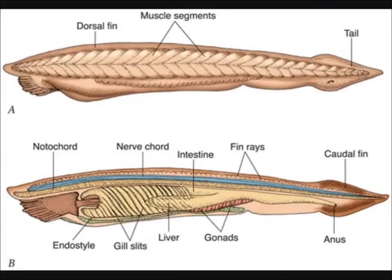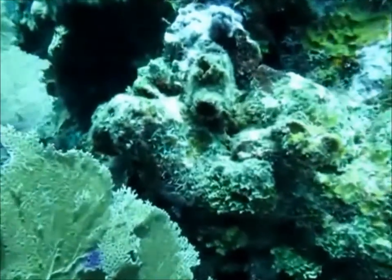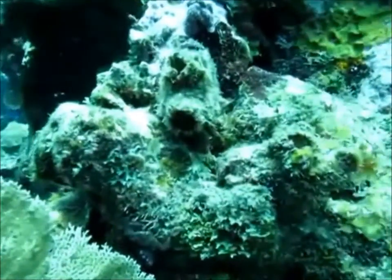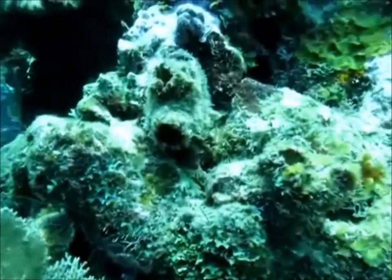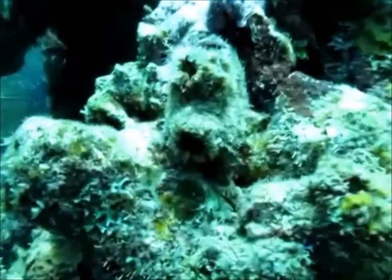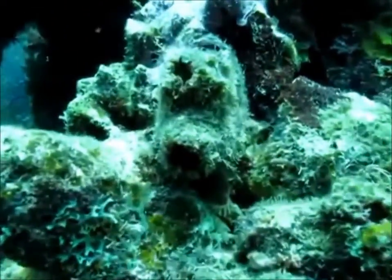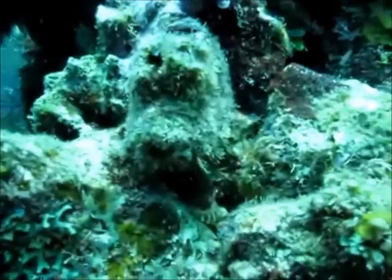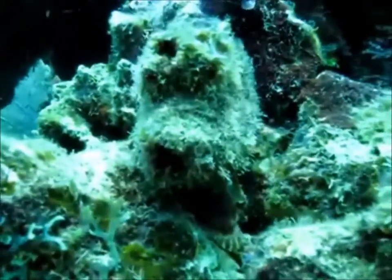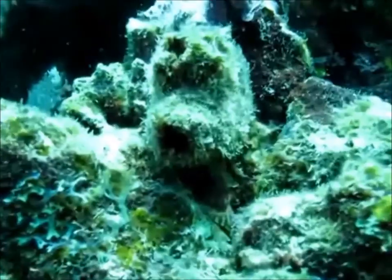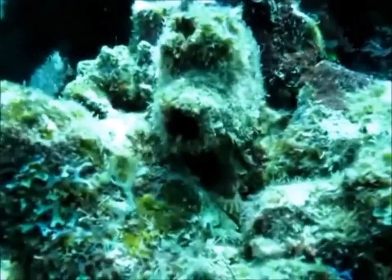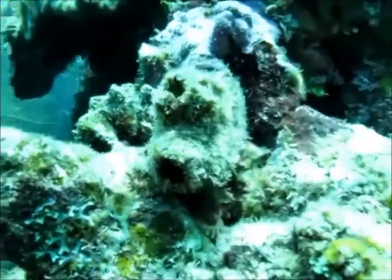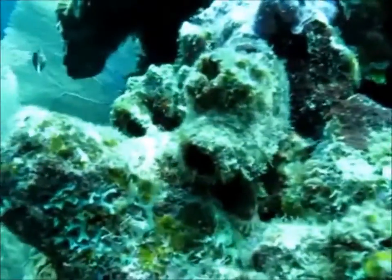Filumul Cordata cuprinde trei subfilumuri importante: urocordata, cefalocordata și vertebrata. Subfilumul Urocordata cuprinde cordate numite și tunicate, dar și mai bine cunoscute sub numele de stropitoare de mare. Mediul de viață este acvatic, cu specii libere, majoritatea bentonice, sedentare.